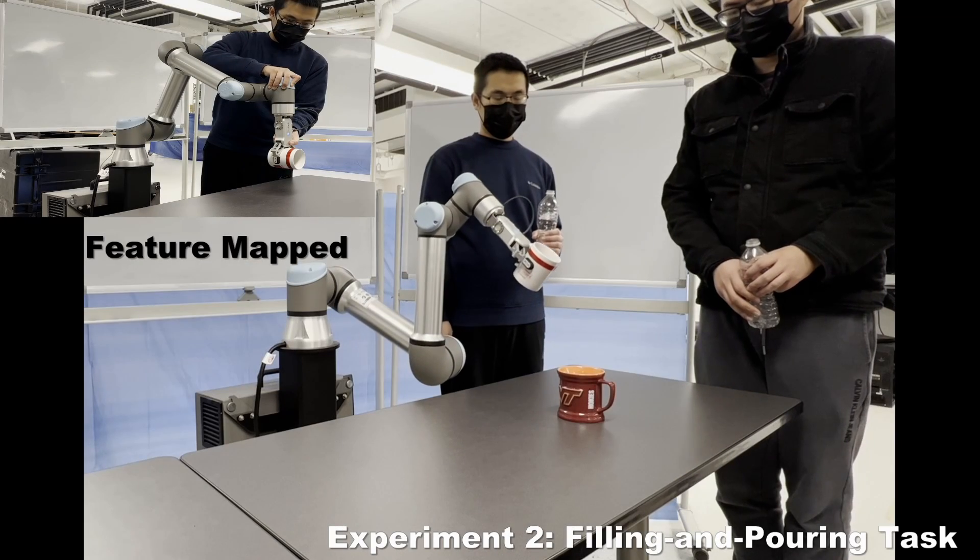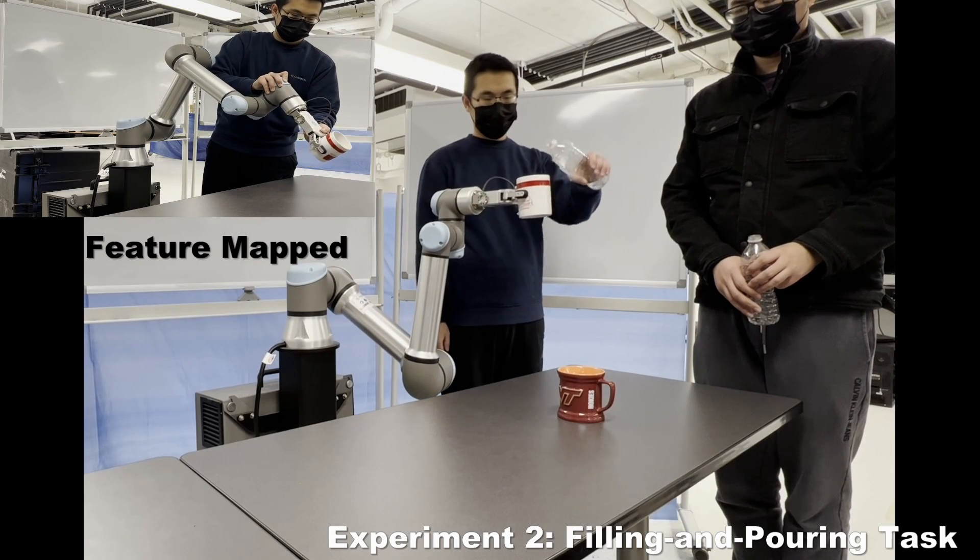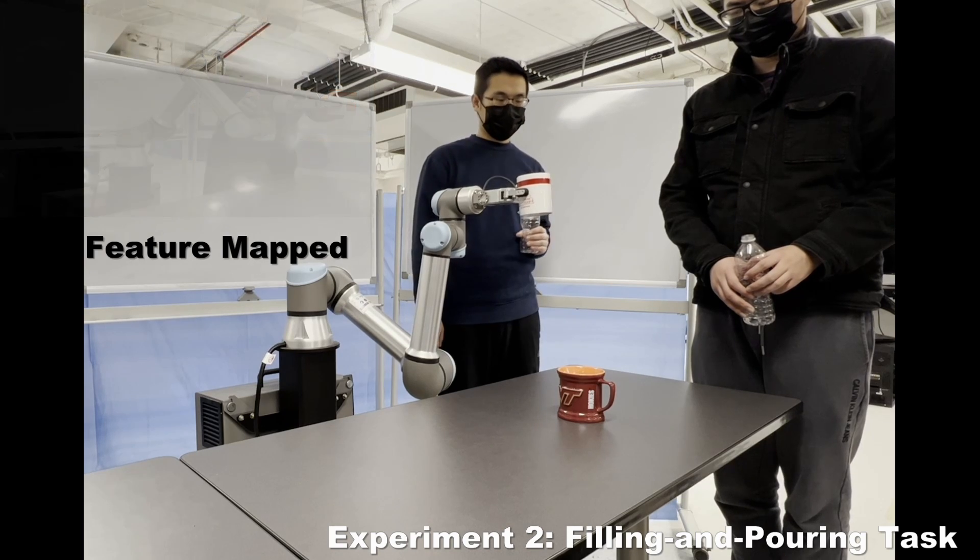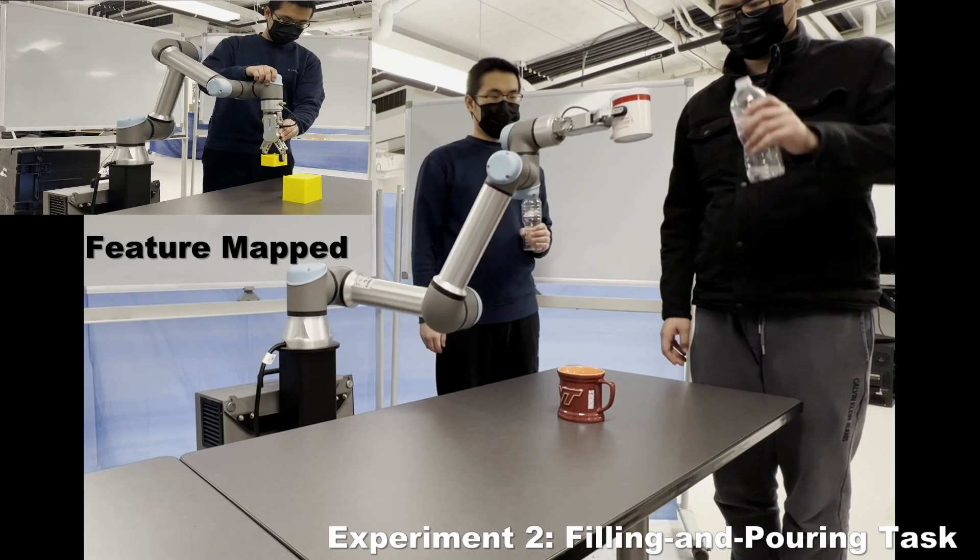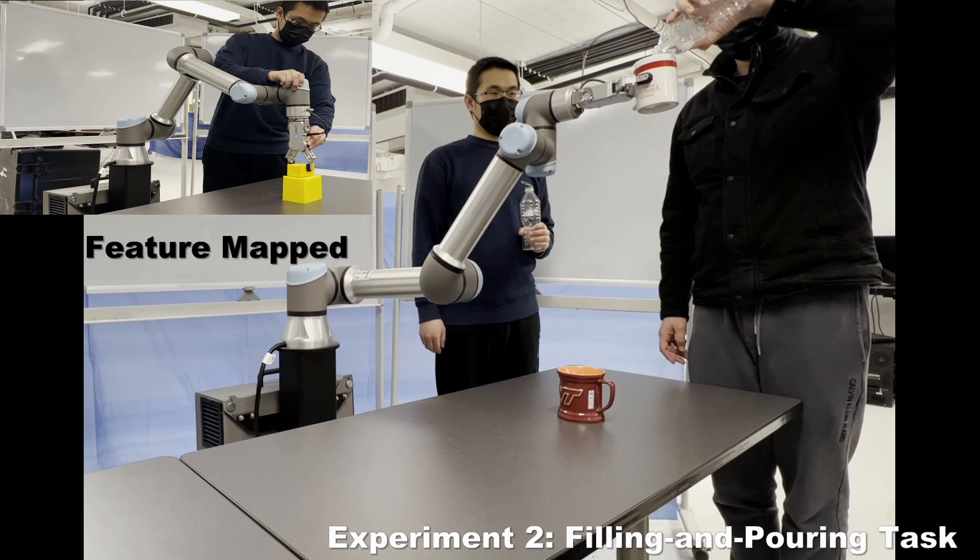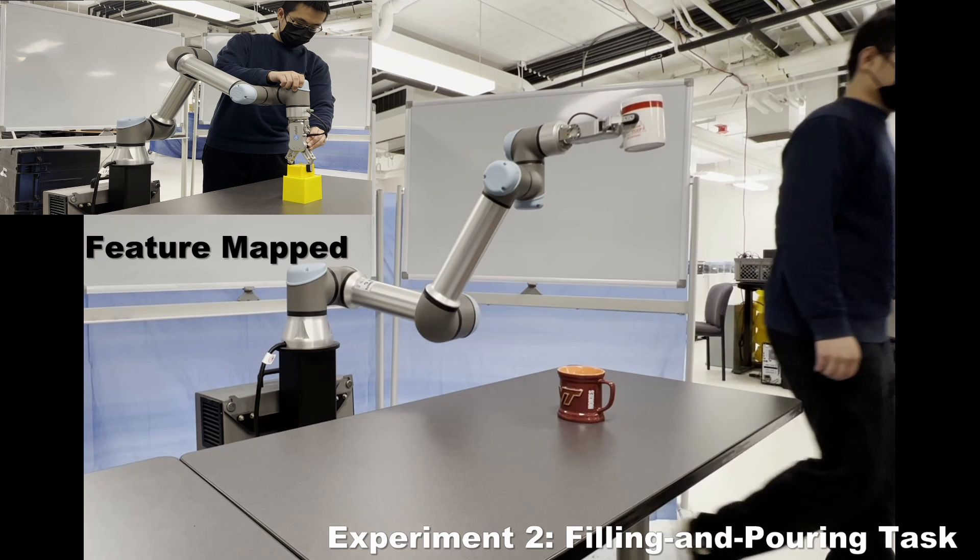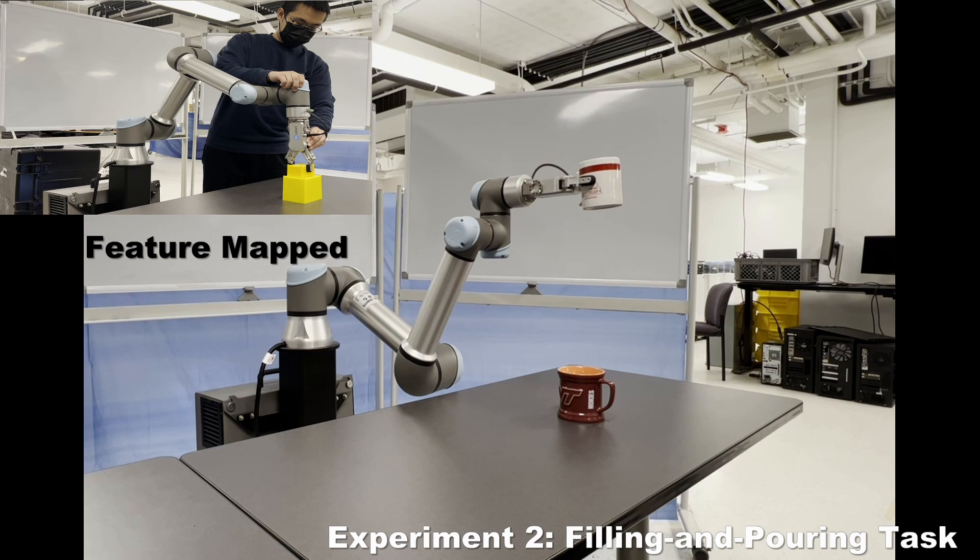In the second experiment, the end effector is required to fill one cup with water at two specific locations and then pour water into another cup. Since all features of the task are covered in the library, a motion plan that maps features of human demonstrated filling, stacking, and screwing tasks to corresponding segments of the task is generated.